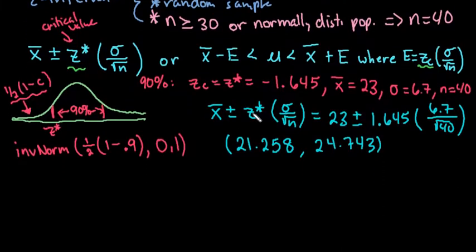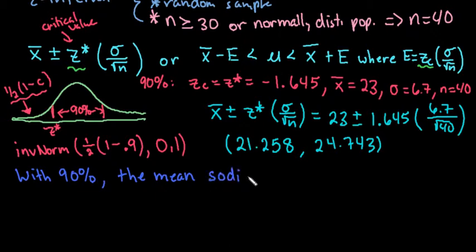So your calculator does tell you a lot of information. The interval itself is just the C lower to C upper. So we would just write down the 21.258 or 75. And the upper was 24.743 approximately. And then remember the interpretation in case you haven't watched my other videos. I do want to make sure that you understand how to interpret. We would say whatever level of confidence. So we would say with 90% confidence. And this is basically just a script that you would fill in. With 90% confidence, the mean sodium chloride concentration of seawater is between these values.